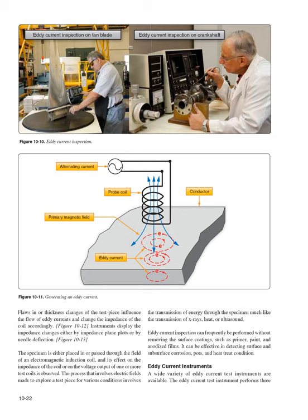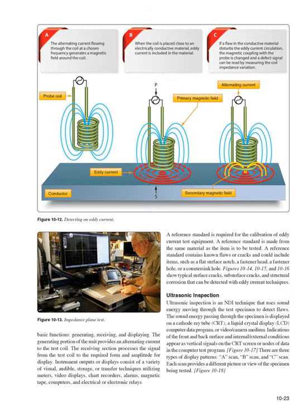Eddy current inspection can frequently be performed without removing surface coatings such as primer, paint, and anodized films. It can be effective in detecting surface and subsurface corrosion and heat treat condition. Eddy current instruments perform three basic functions: generating, receiving, and displaying. The generating portion provides alternating current to the test coil. The receiving section processes the signal to the required form and amplitude for display. Instrument outputs consist of a variety of visual, audible, storage, or transfer techniques utilizing meters, video displays, chart recorders, alarms, magnetic tape, computers, and electrical or electronic relays. A reference standard is required for calibration — made from the same material as the item to be tested — and contains known flaws such as a flat surface notch, fastener head, fastener hole, or countersink hole.